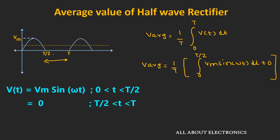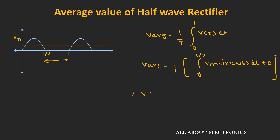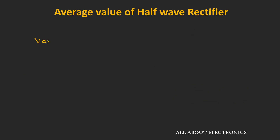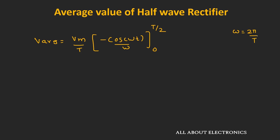Because for that time period the output is 0, we can write V_average = (1/T) × integral from 0 to T/2 of Vm·sin(ωt) dt. Integrating this expression gives V_average = Vm/T × [−cos(ωt)/ω] from 0 to T/2. Now here, ω = 2π/T, where T is the time period. Taking out ω, we can write this as Vm/T × (T/2π) × [−cos(2πt/T)] from 0 to T/2.